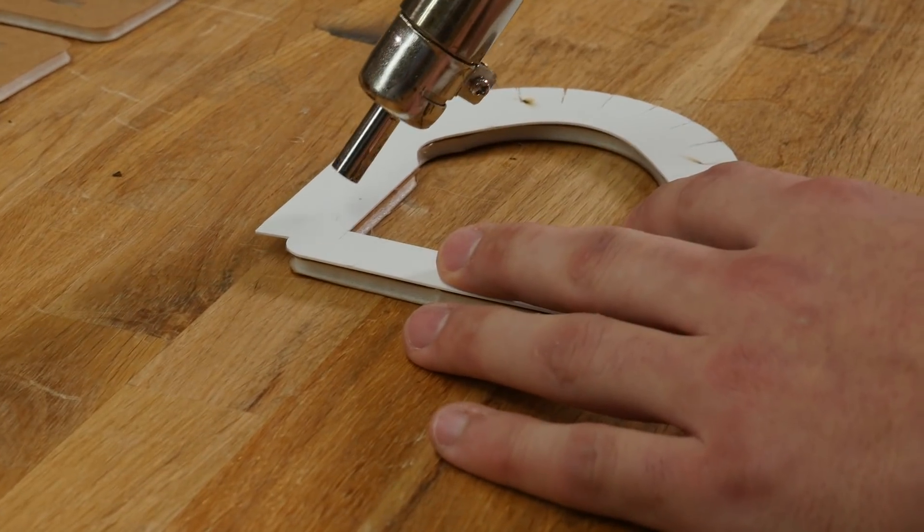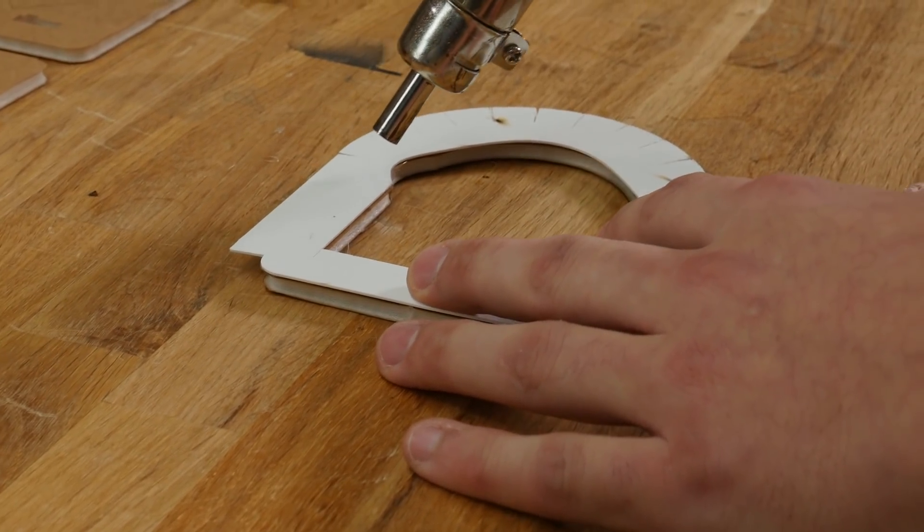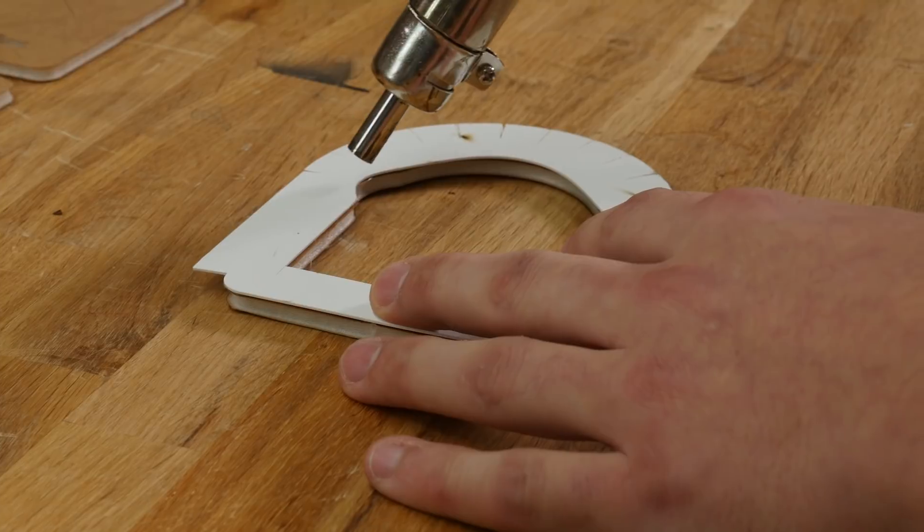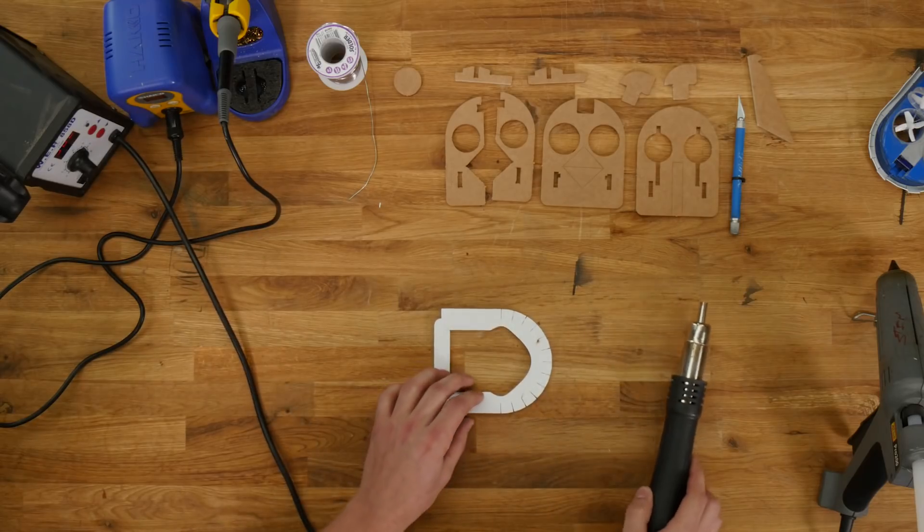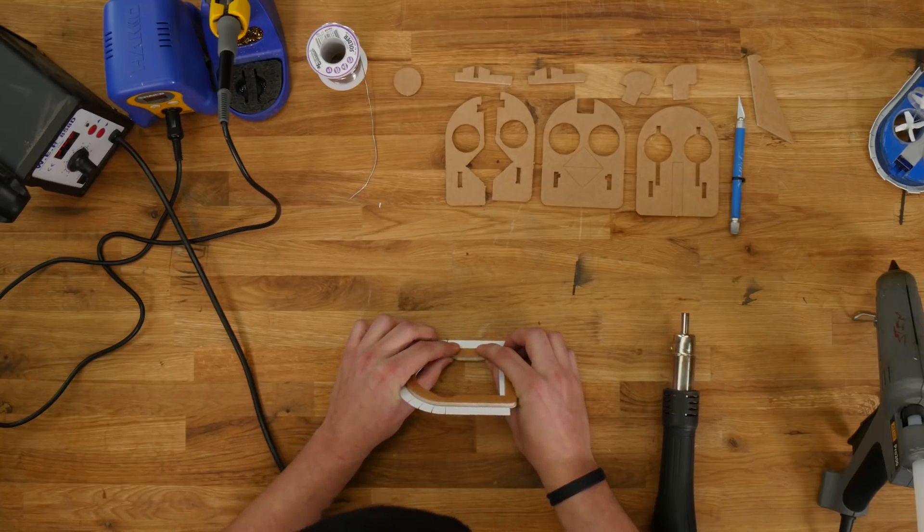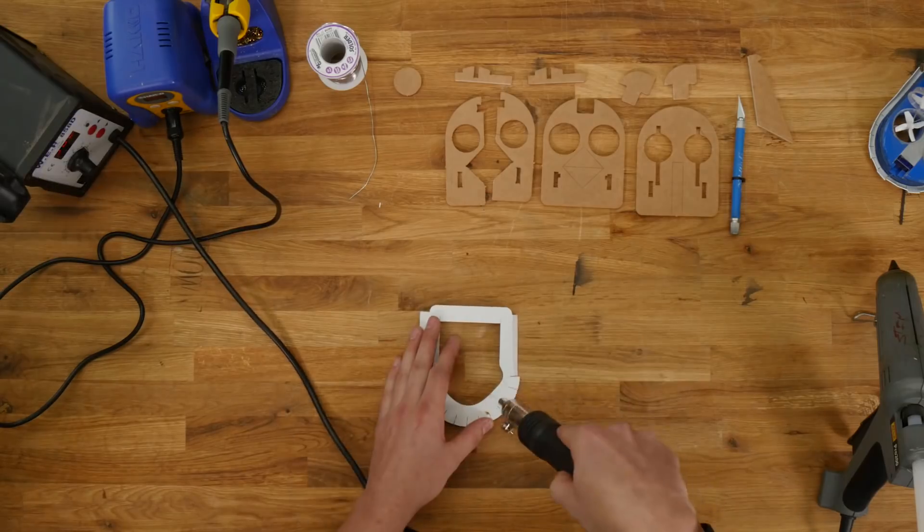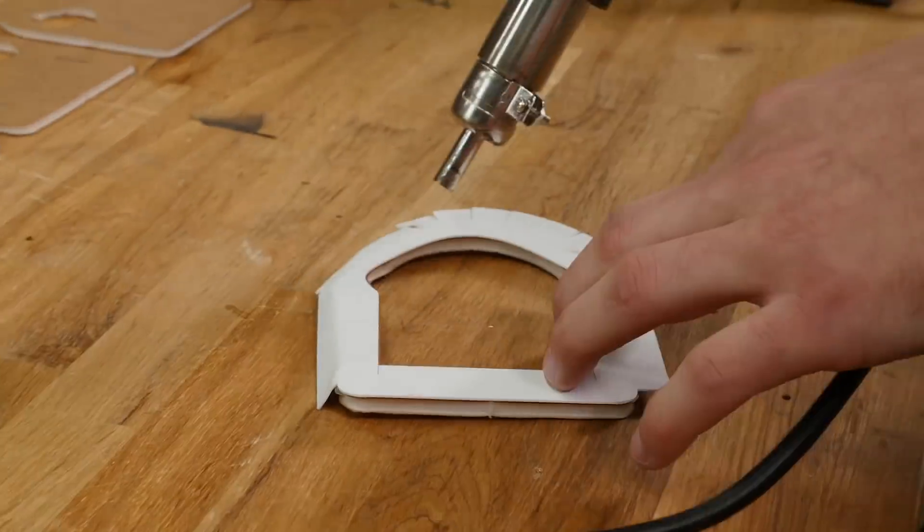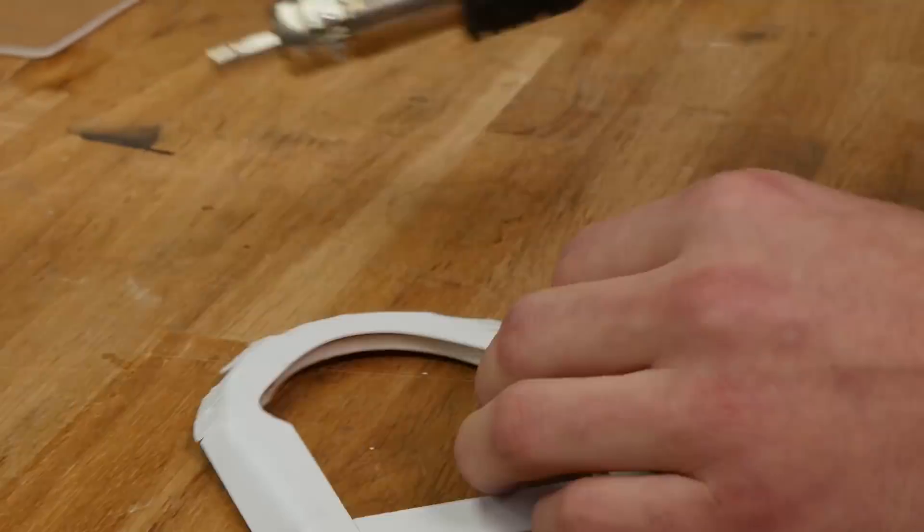Take your heat gun or hair dryer and apply light heat along the edge as you bend the plastic up. I like to use the table to my advantage and bend it along the table. You're going to want the plastic to be at a 30 to 40 degree angle. It doesn't have to be perfect, just enough to get over those cracks and carpet.